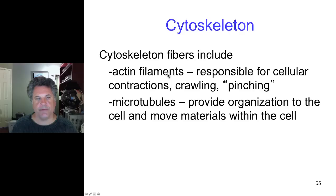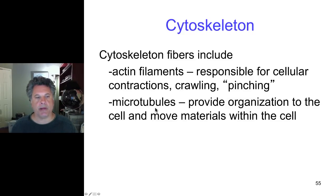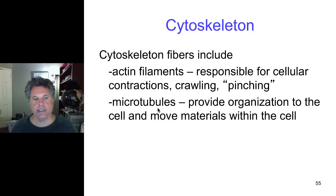Actin filaments, as the name implies, are simply polymers of the protein actin. Actin is a globular protein that can be polymerized into filaments. Microtubules arise when alpha and beta tubulin proteins are polymerized, and microtubules form a larger cytoskeletal element than actin.